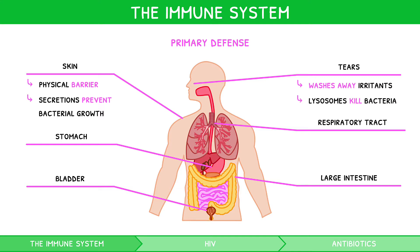The respiratory tract contains moist mucous membranes, which trap pathogens and contain lysozyme. In addition, these membranes are lined with ciliated cells, which have extensions called cilia on their surface, which sweep away microbes.